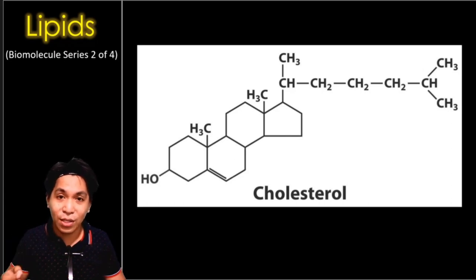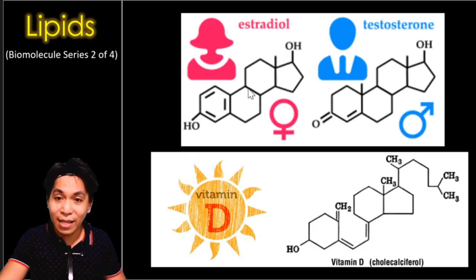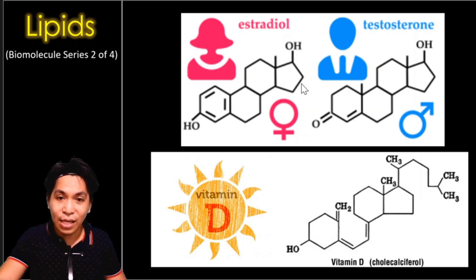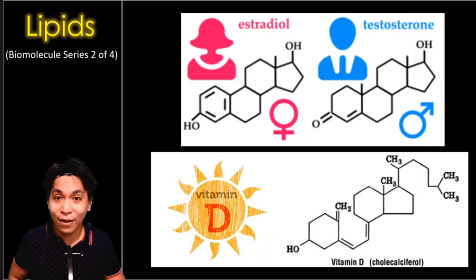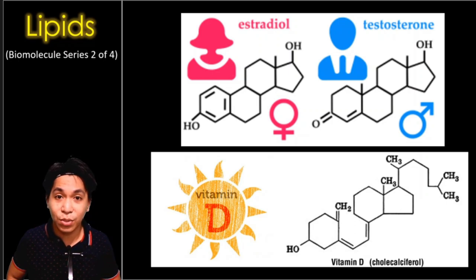Because of steroids, we have cholesterol, and because of cholesterol, we have estradiol for women and testosterone for men. Steroids are present in the structure of these hormones. Cholesterol also promotes the creation of vitamins — one important vitamin produced via cholesterol is vitamin D, also called cholecalciferol. In reality, our body actually produces its own cholesterol to continue processes like hormone production and vitamin D utilization.